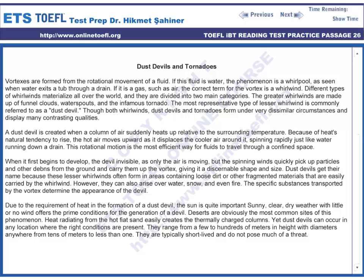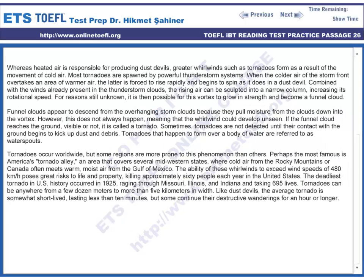They range from a few to hundreds of meters in height, with diameters anywhere from tens of meters to less than one. They are typically short-lived and do not pose much of a threat. Whereas heated air is responsible for producing dust devils, greater whirlwinds such as tornadoes form as a result of the movements of cold air. Most tornadoes are spawned by powerful thunderstorm systems.